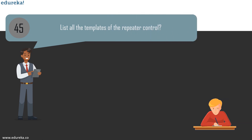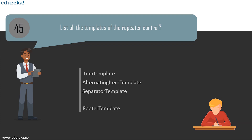Question 45: list all the templates of the Repeater control. The templates are: Item Template, Alternating Item Template, Separator Template, Header Template, and Footer Template. Item Template is used for elements rendered once per row of data. Alternating Item Template is rendered every other row, allowing you to alternate background colors. Header Template is rendered once before the item template section. Footer Template is rendered once after the item template section. Separator Template renders between each row, such as line breaks.